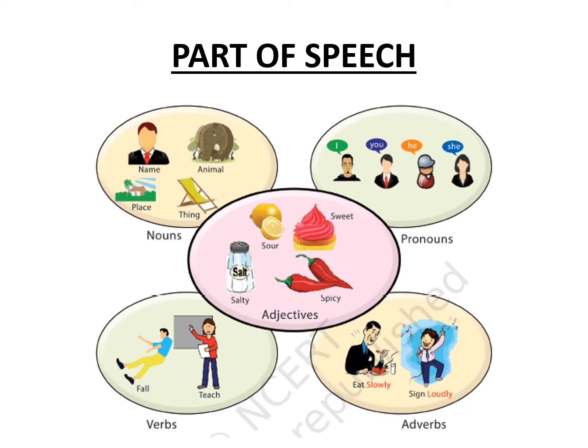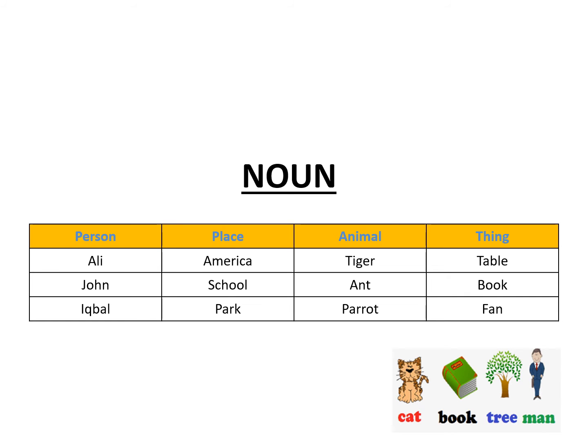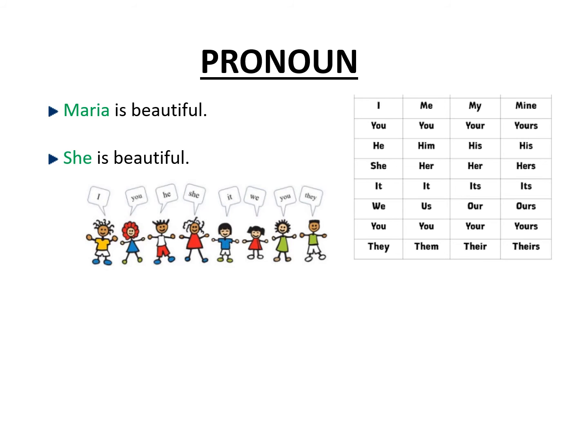Now we will be talking about parts of speech. We will be covering five parts of speech: noun, pronoun, verb, adverb, and adjectives. Now what are nouns? Nouns are basically the name of a person, place, animal or thing — the naming words. Now let us move on to pronouns. Pronouns are words that can be used in place of a noun. For example, 'Maria is beautiful' — Maria is a noun, the name of a person. Maria can be replaced with 'she' — 'She is beautiful.' So 'she' is a pronoun. You can see the list of pronouns given here.